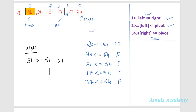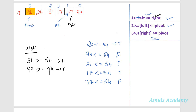Now I move to the right side. First I check whether left is less than or equal to right — yes, it is true. I check the value at right: is 93 greater than or equal to 54? Yes, so I move to the next value. Right now points to index 4. Again I check whether left is less than or equal to right — they are both equal, pointing to index 4. Is 77 greater than the pivot 54? Yes, so I move to next value. Right index becomes 3.